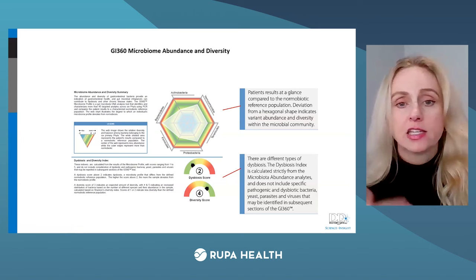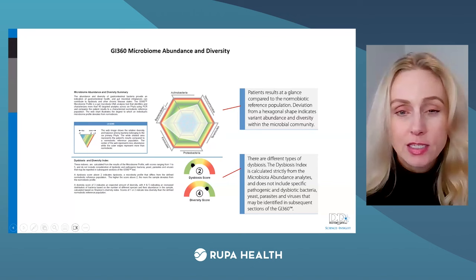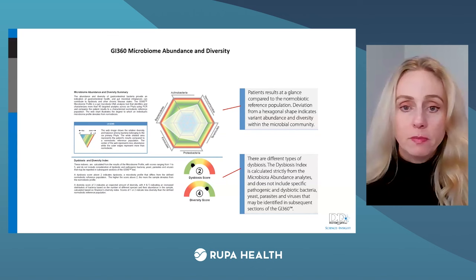You will hear these six main phyla over and over again in clinical practice and in research — this is well-established: actinobacteria, Verrucomicrobia, Tenericutes, Proteobacteria, Firmicutes, and Bacteroidetes.